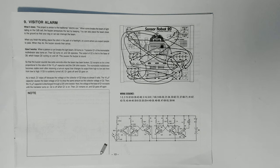This is project number nine, the visitor alarm. This project is similar to the traditional electric eye. When someone breaks the beam of light falling on the CDS cell, the buzzer announces the fact by beeping. You can place the beam close to the ground so that your dog or cat can interrupt it. When you finish the wiring, place the robot in the path of a flashlight where you expect people to pass.